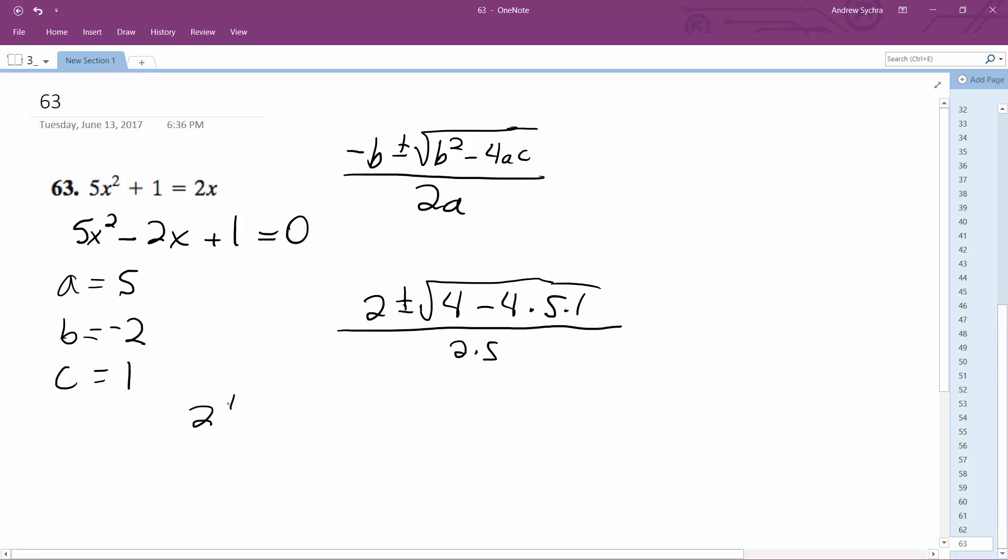So we get 2 plus or minus the square root of 4 minus 20, all over 10.